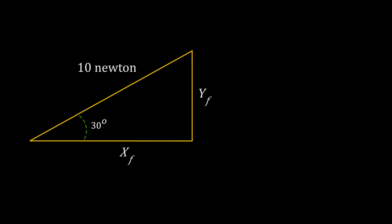This angle 30, this 10 newton, yf, xf, they are all related. It is also a law of nature that if you know this 10 newton and 30 degree angle, just these two, you can actually find yf. And that law is expressed as sine. So sine θ is basically opposite side divided by hypotenuse.